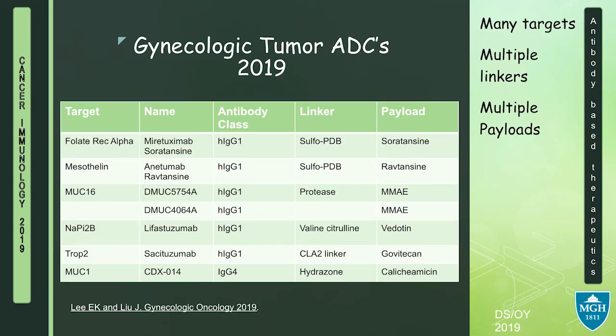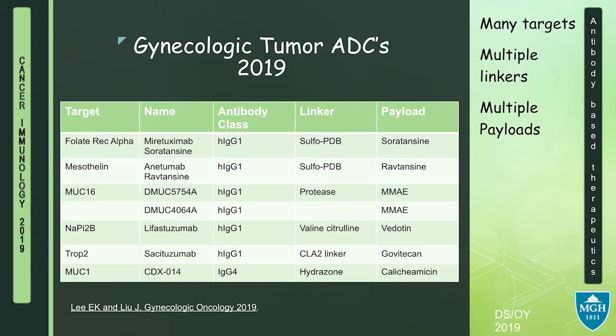This is by no means an exhaustive list, but these are some of the ADCs we're currently excited about in gynecologic malignancies. Development in this area has been plagued by starts and stops — we would perform a phase one study with mixed results, go back, tweak the linker, try again, tweak the payload, try again, etc. Many of these are in the auristatin and maytansinoid classes. Some of these antigens are a little esoteric, like NAPI-B1, which is a sodium-dependent phosphate transporter, as well as Mucin-1, Trop-2, etc.